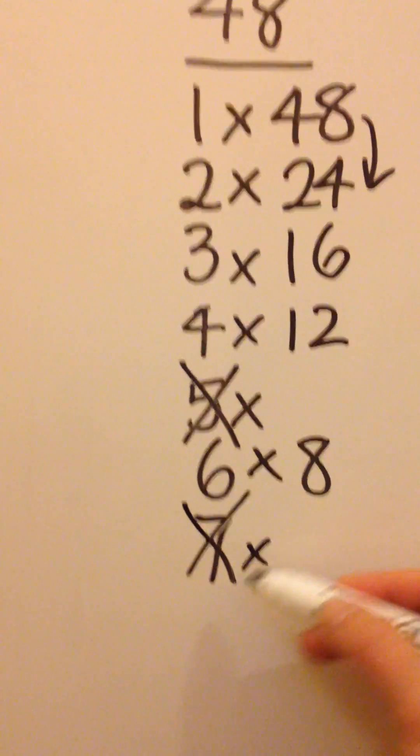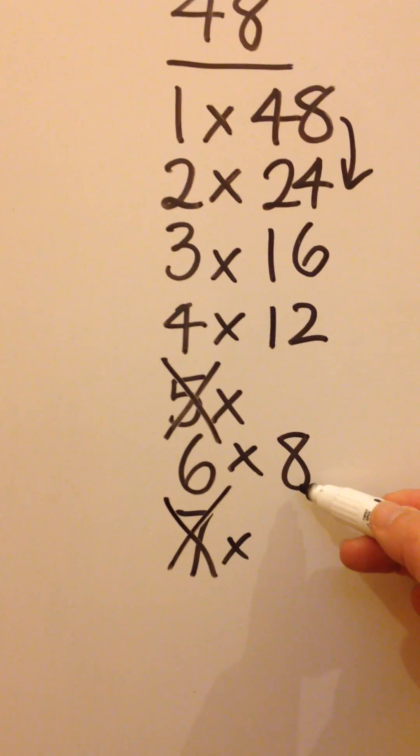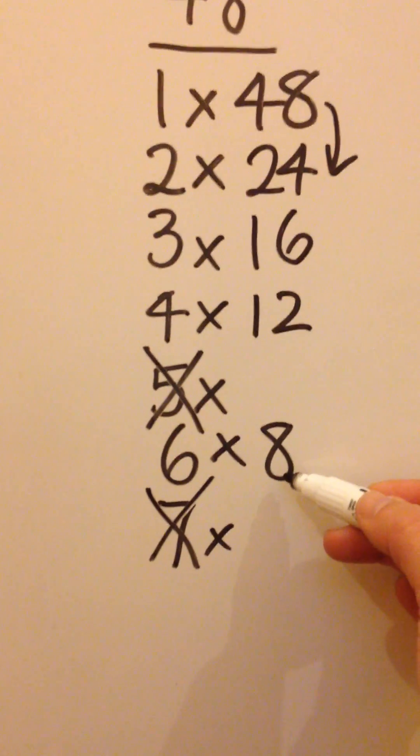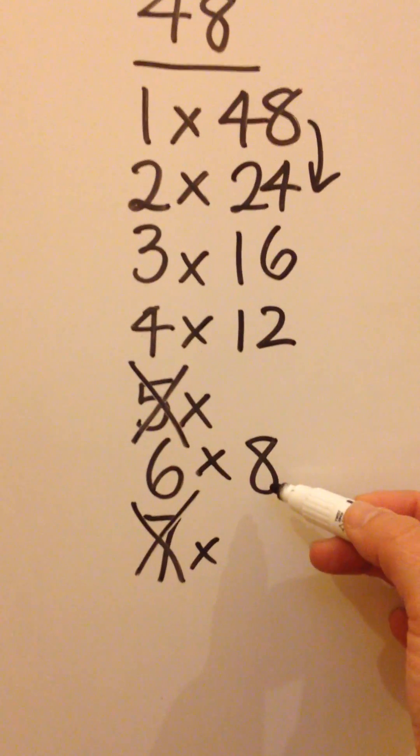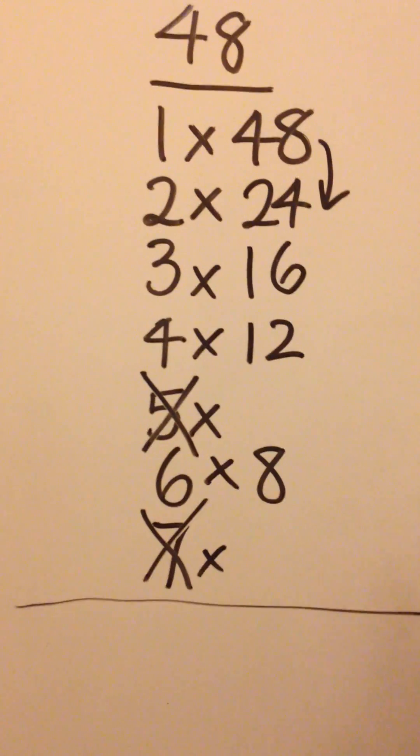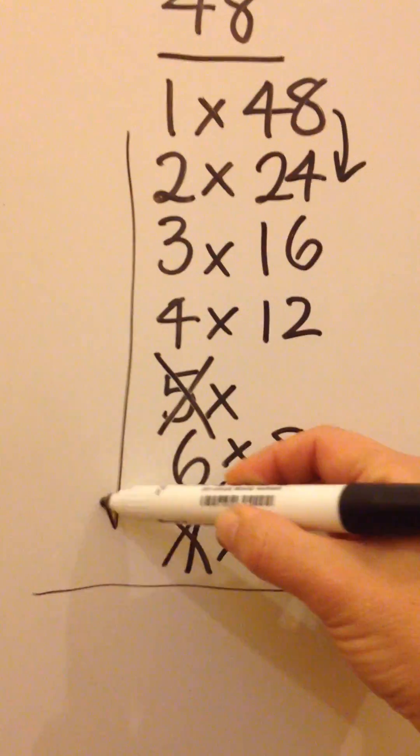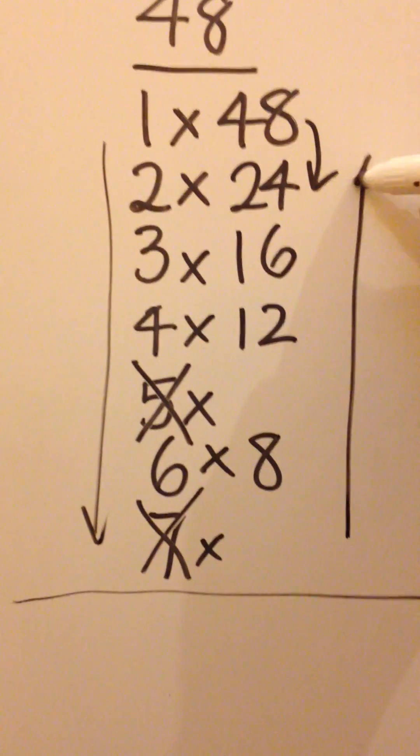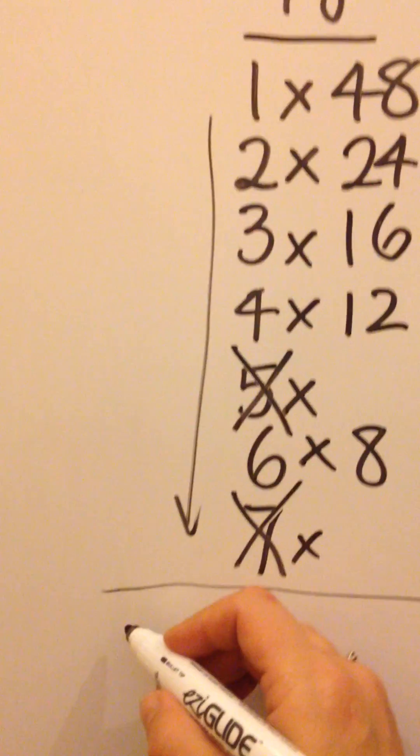I go to write down 8, and then I notice it's already written down as a factor. And that's a message to tell me I've finished, I've found them all. So strike a line underneath, and to write those factors in order, put an arrow down the left-hand side, up the right-hand side, and that will put the numbers in order for you.